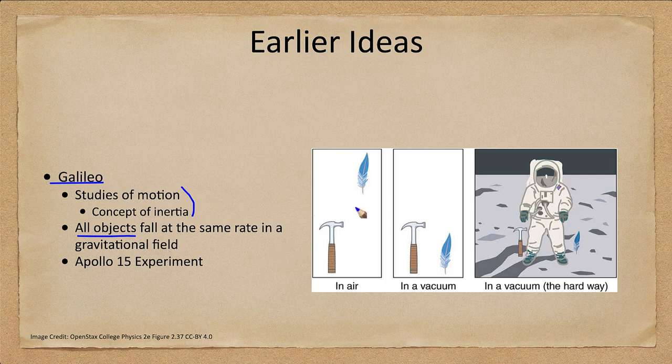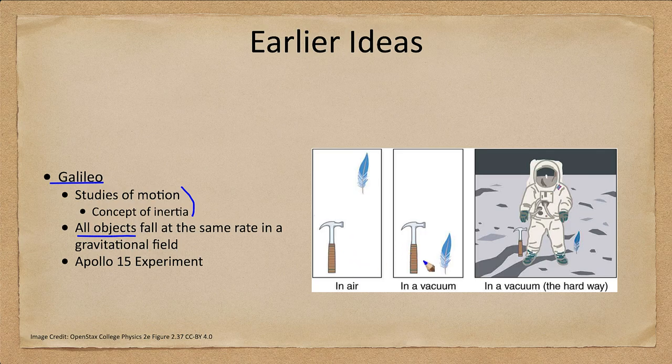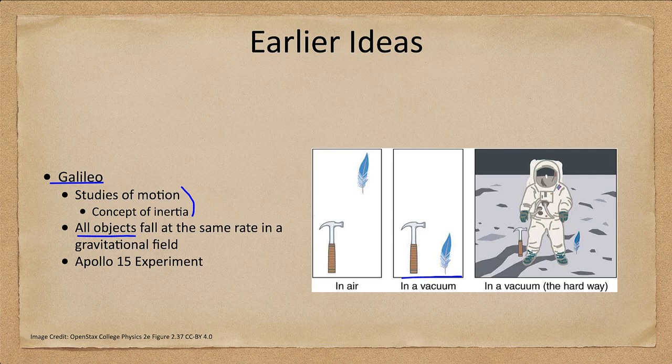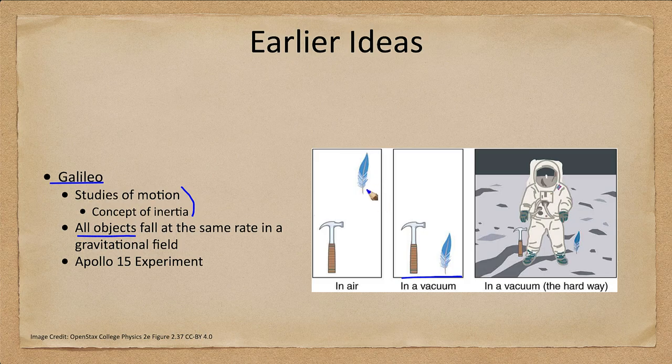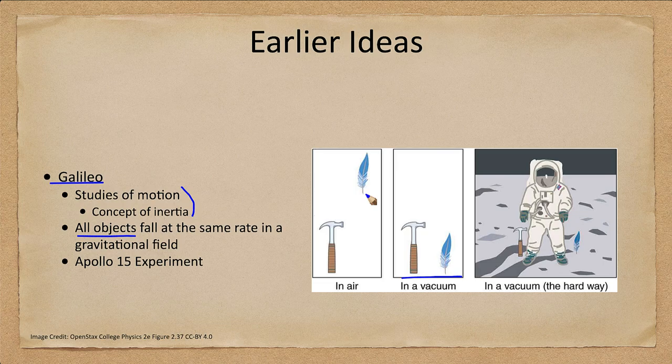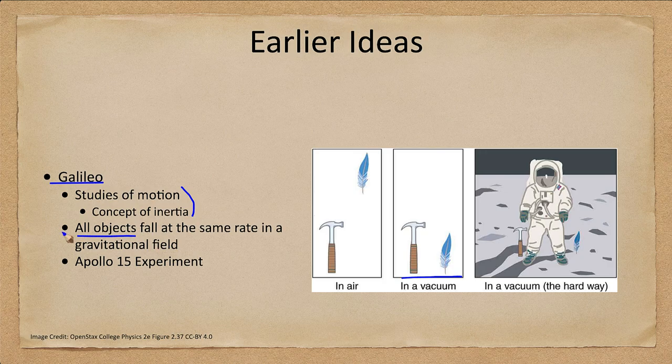And what that means is that if you drop a hammer and a feather at the same time they will land at the same time. Heavier objects do not fall any faster than lighter objects. In fact they fall at exactly the same rate. Now we don't notice this here on Earth because we have air and air resistance will keep the feather from falling as fast as the hammer. But if we do this experiment on the moon we will see that they do fall at exactly the same rate.